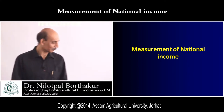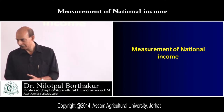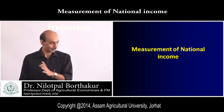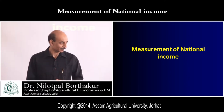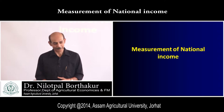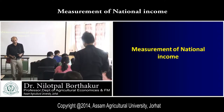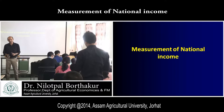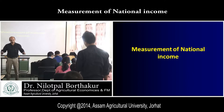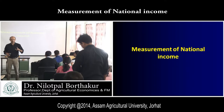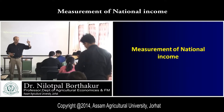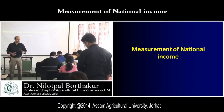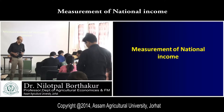We have to subtract something from GDP to get GNP. GDP — gross domestic product — is the total market value of all final goods and services currently produced within the domestic territory. But in the case of GNP, we also consider net factor income — the income earned by people of our country who work abroad is also our income.